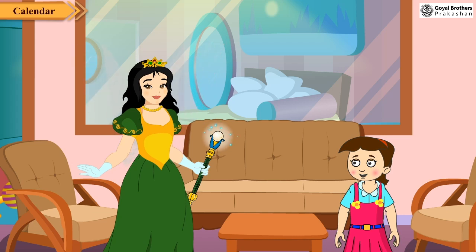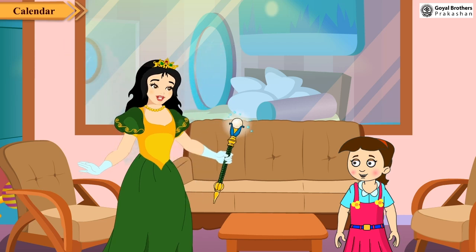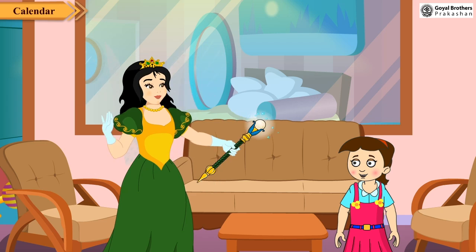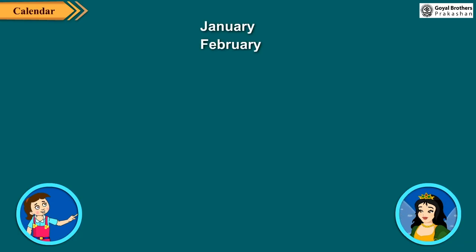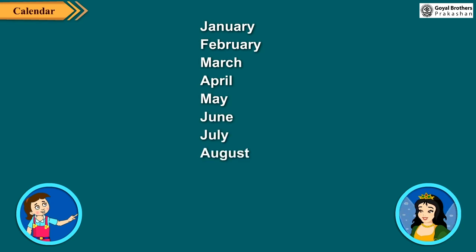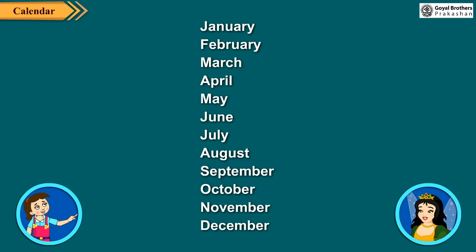Good Neha. Now I will tell you about months and year. There are twelve months in a year: January, February, March, April, May, June, July, August, September, October, November and December. January is the first month and December is the last month of the year. After December, again comes January and this repetition goes on.